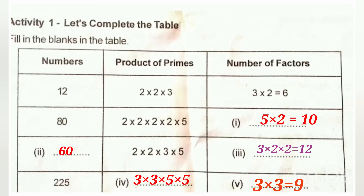We have a table to complete. Numbers in one section are written as a product of primes, and we need to find the number of factors. We will do prime factorization. For example, 2 into 2 into 2 into 5 is the factorization.